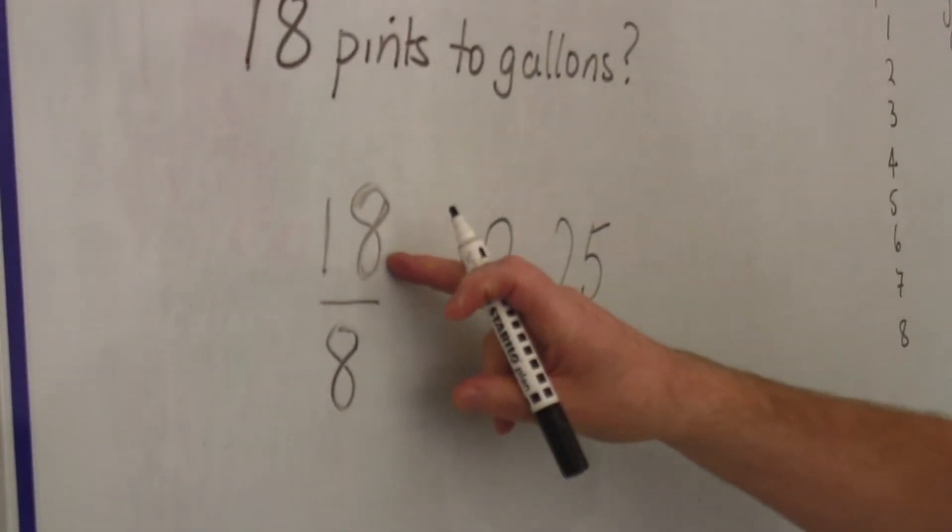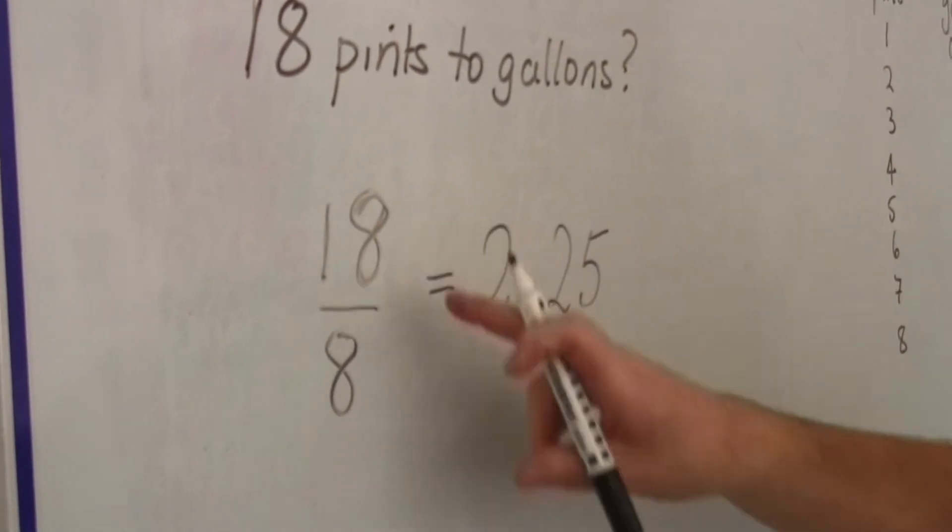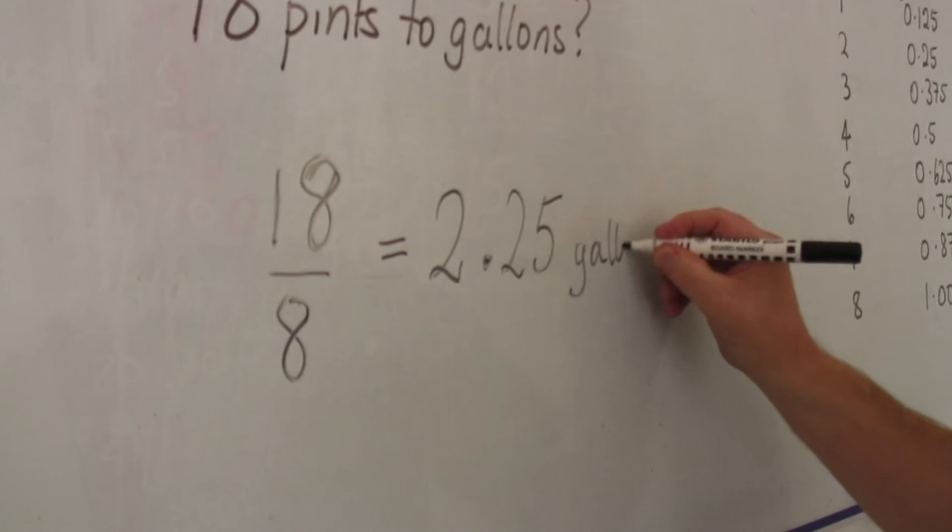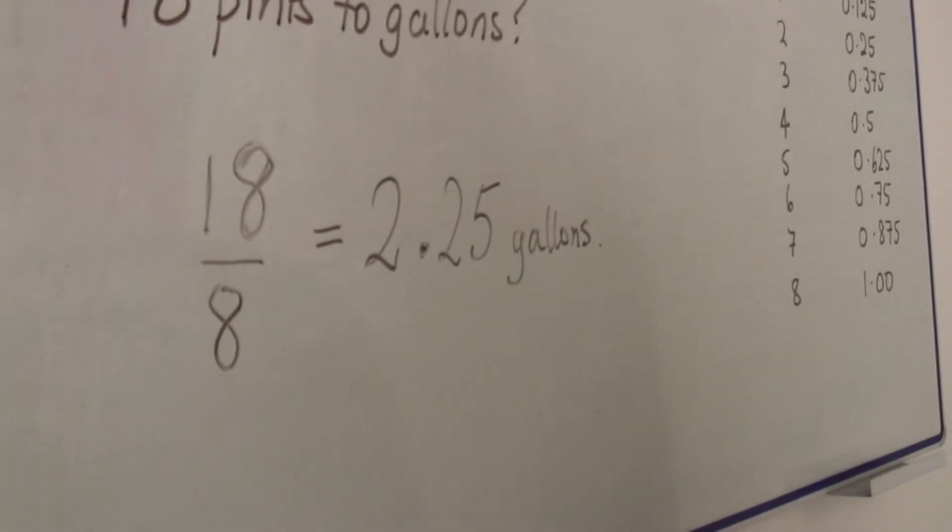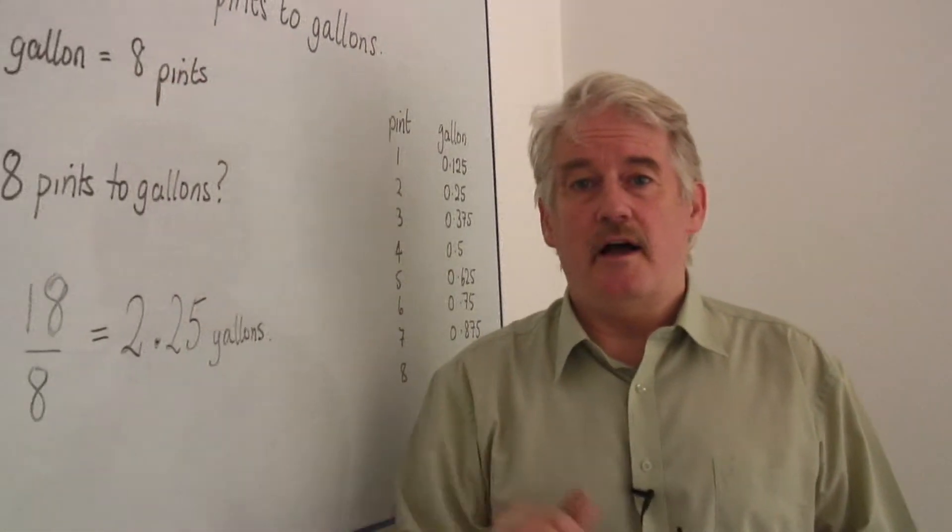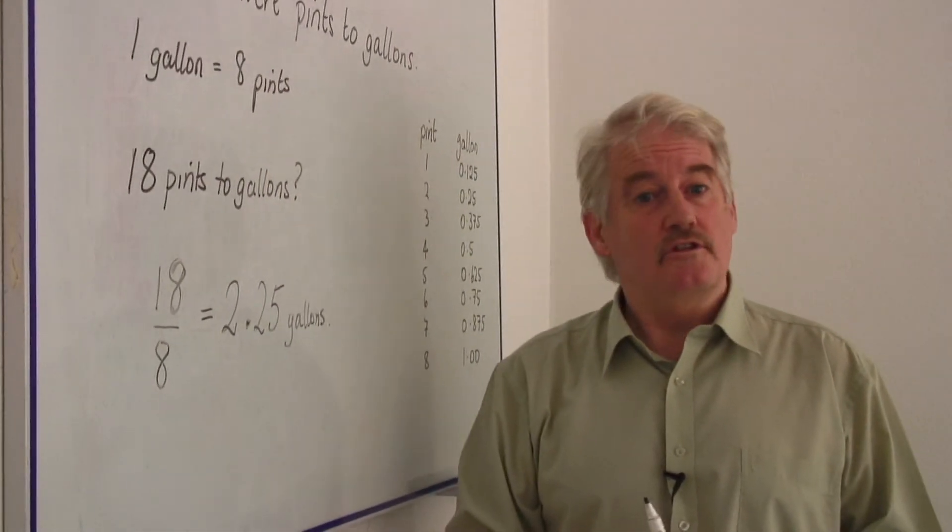So our 18 pints to gallons, 18 pints turns into 2.25 gallons. Well, this is a very straightforward way of converting our pints into gallons if we wish to do so.